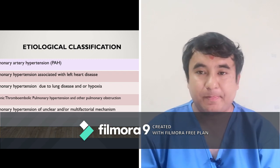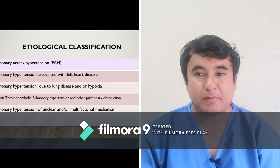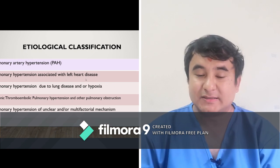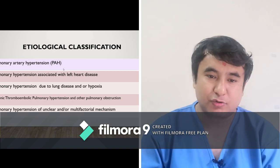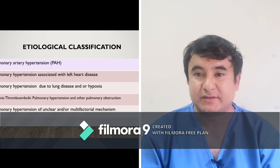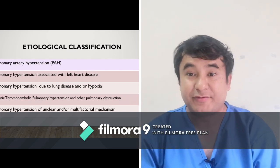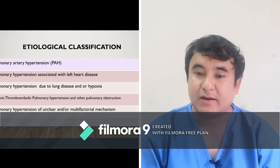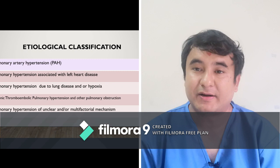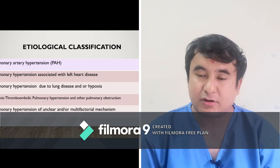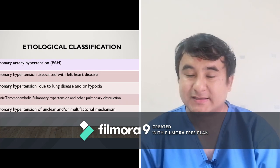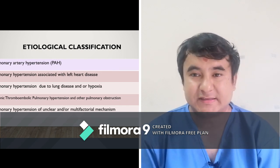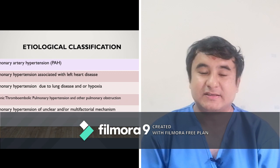Etiological classification: we can categorize pulmonary hypertension into five groups depending upon pathophysiology or etiology. Group one is pulmonary artery hypertension per se — there is a problem in the pulmonary artery itself. Group two is pulmonary hypertension due to left heart disease, where an increase in mean pulmonary artery pressure is caused by left heart conditions. We see many cases of mitral stenosis, MR, AS, or AR where patients ultimately develop features of pulmonary hypertension.